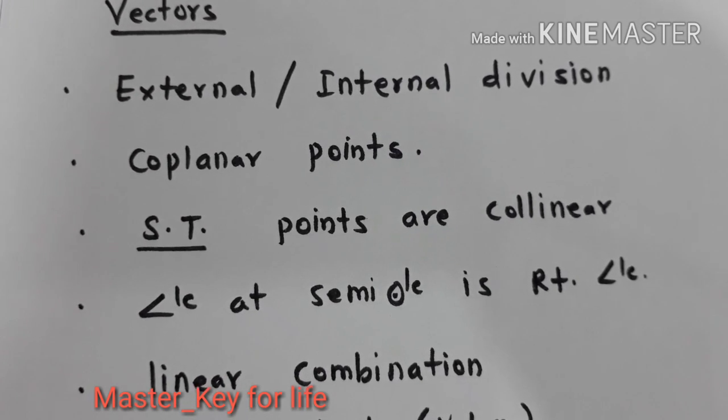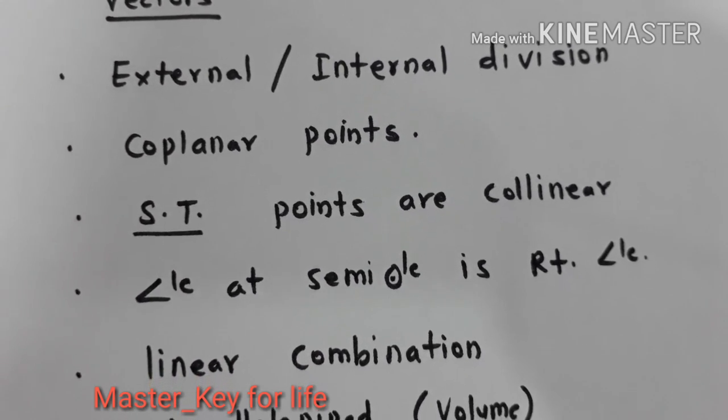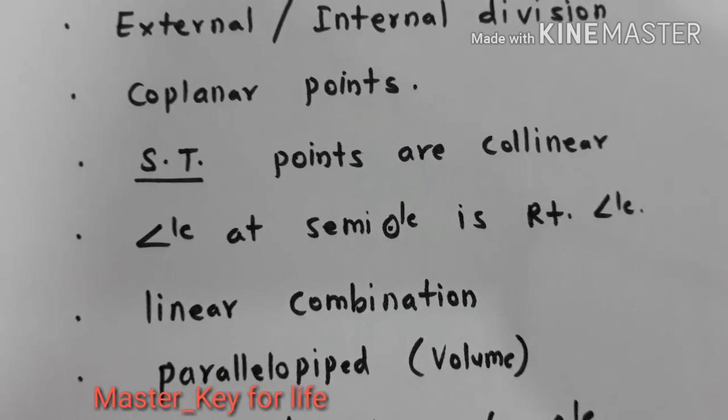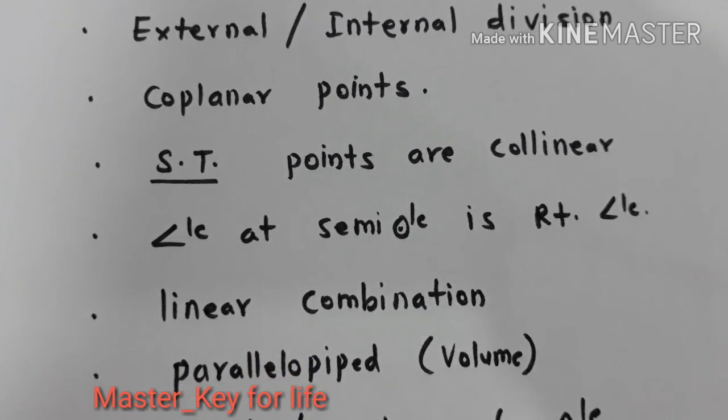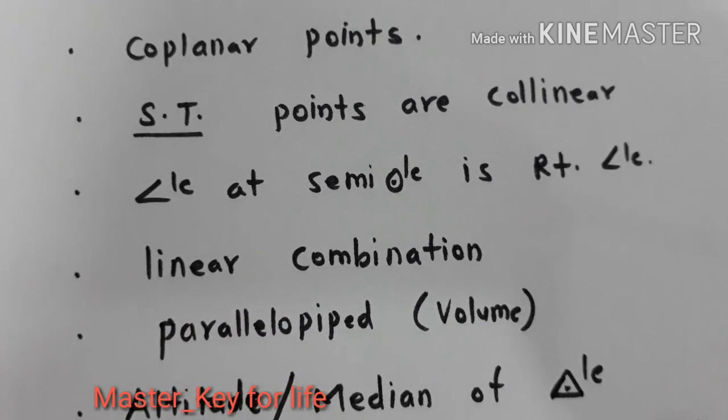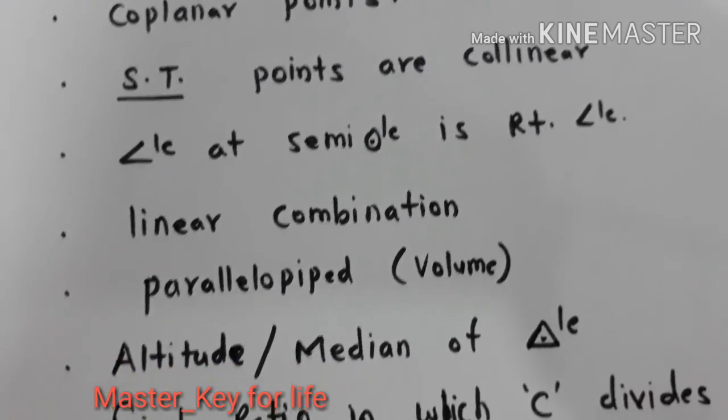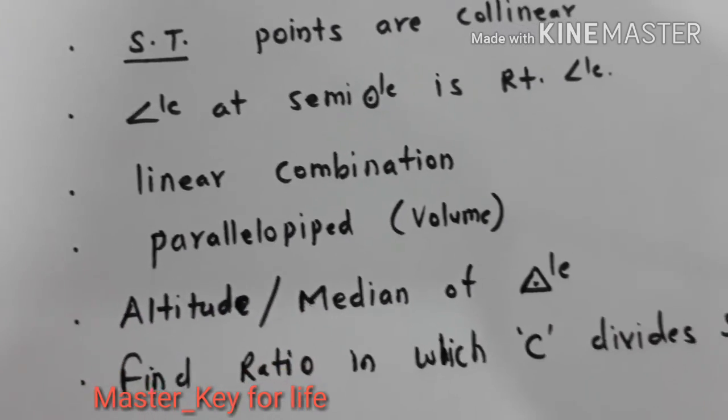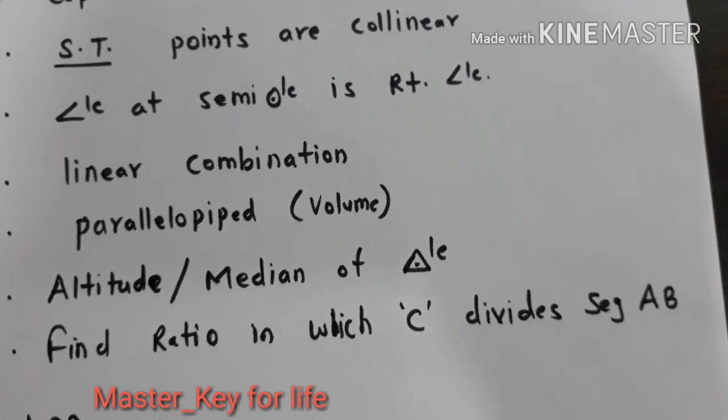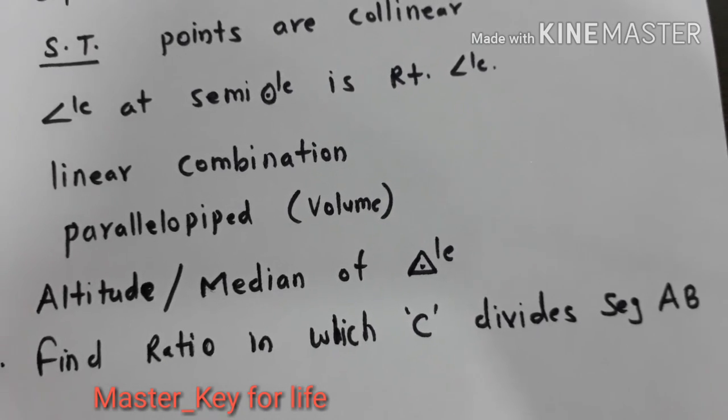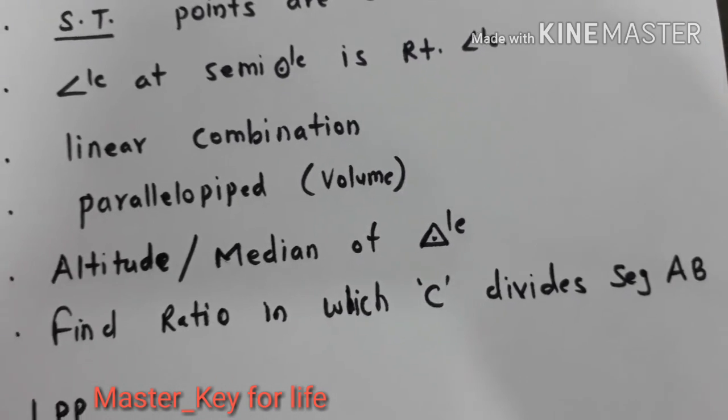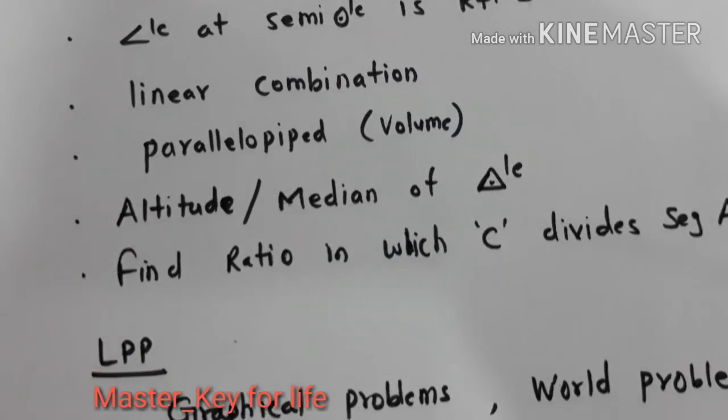Expressing one vector as a linear combination of other vectors is very important. Problems based on volume of parallelepiped. Very important and expected question. Altitude and median of a triangle are concurrent. Very important question. Finding out the ratio in which a point, say for example C, divides a segment AB is very important problem.